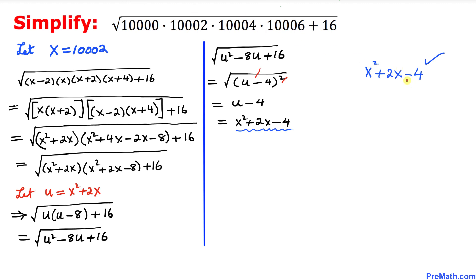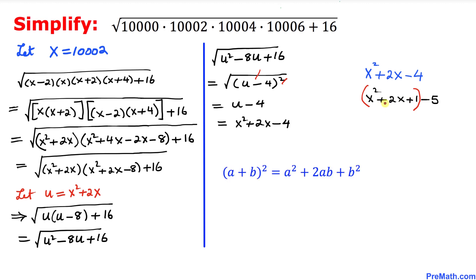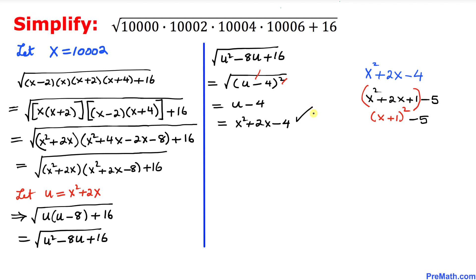Now let's tweak the negative 4 by rewriting it as positive 1 minus 5, so the expression becomes x squared plus 2x plus 1 minus 5. The part x squared plus 2x plus 1 is a perfect square using the (a plus b) squared formula, giving (x plus 1) squared. So the result is (x plus 1) squared minus 5.